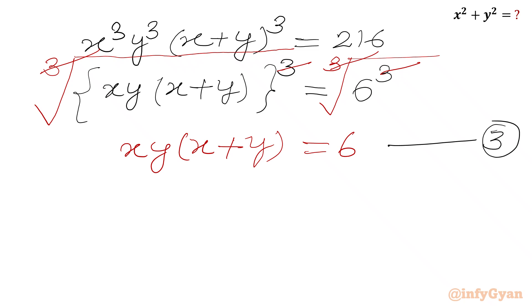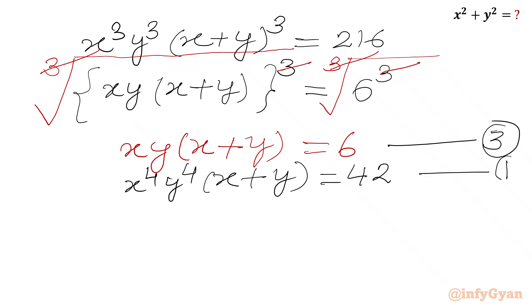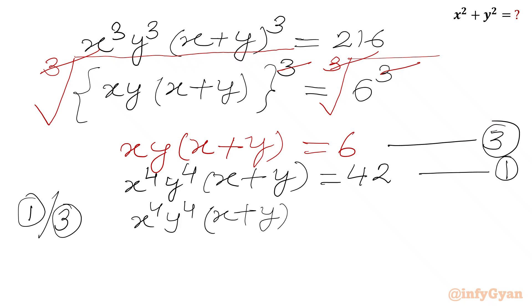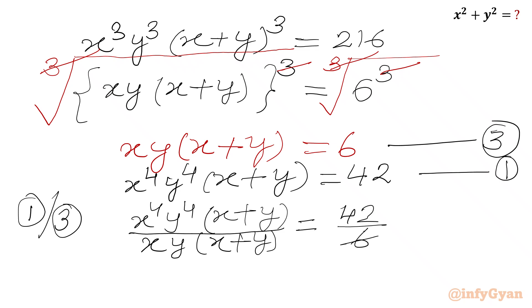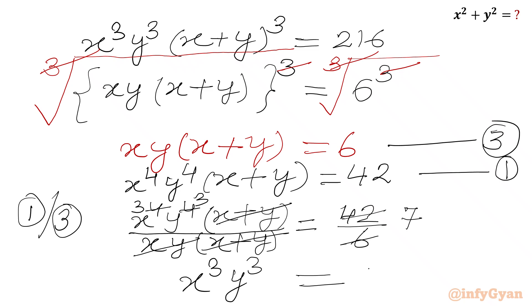Now I will write our first equation: x⁴·y⁴·(x+y) = 42. This was equation 1. Now I will divide equation 1 by equation 3. So I write x⁴y⁴·(x+y) over xy·(x+y) equals 42 over 6, which gives 7. The (x+y) terms cancel, and dividing x⁴y⁴ by xy leaves x³y³, so we need to write power 3.